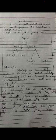Vowels are classified in the following classes: monophthongs, diphthongs, and triphthongs. Monophthongs are subdivided into short vowels and long vowels, while diphthongs are subdivided into centering vowels and closing vowels.